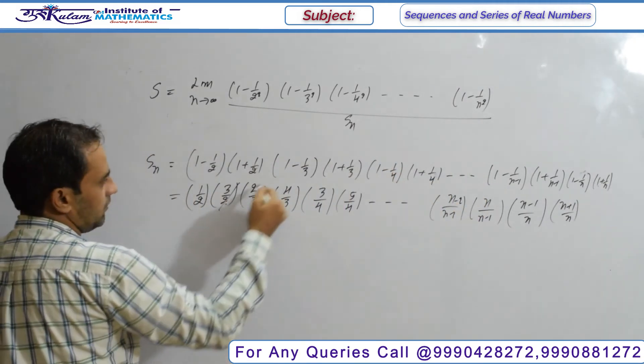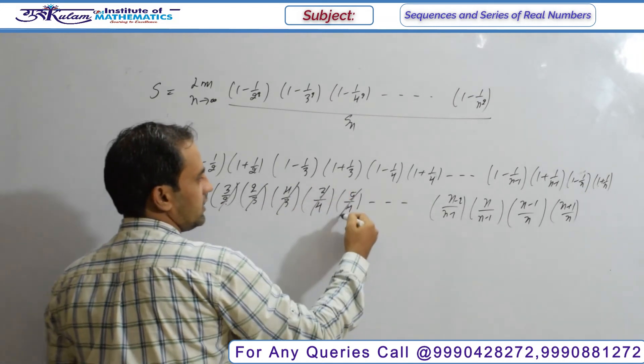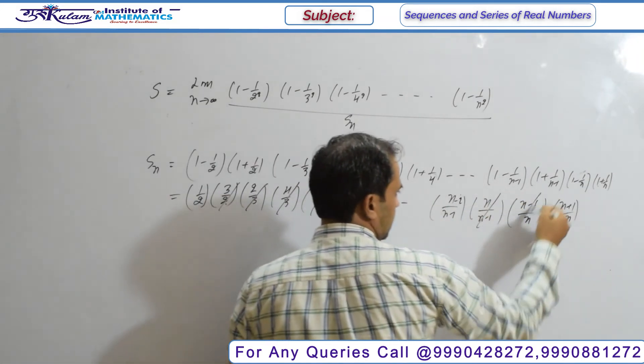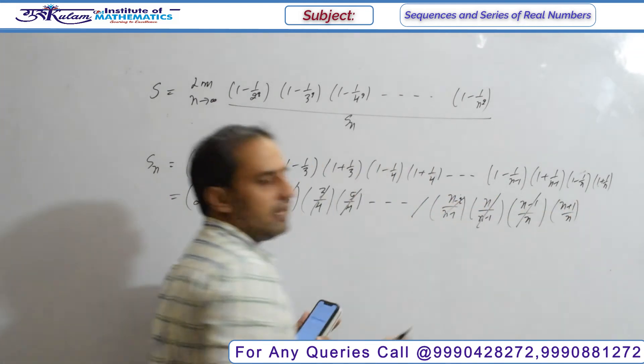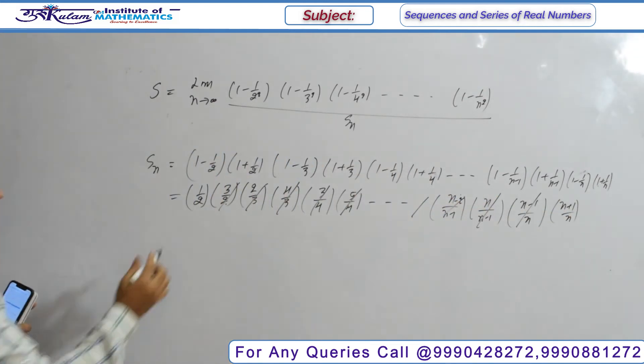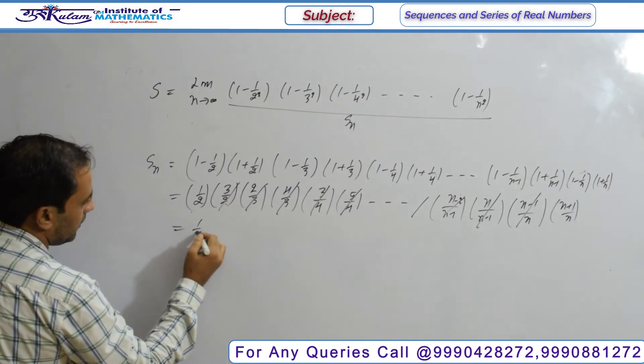Check these terms: this cancels out, this cancels out, this cancels out. This term cancels out, the previous terms cancel out. Finally, after cancellation, only the term 1/2 remains.